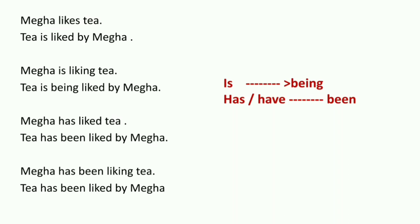Now, what change do we make to the verb? We keep the tense the same. 'Likes' is present tense — all sentences on slide 1 are present tense. Since I must not change the tense, I keep it present and add the helping verb 'is.' So: 'Tea is liked by Mega.' Helping verb 'is' is added, verb becomes third form 'liked.' Let's verify the four conditions: subject-object changed ✓, verb third form ✓, tense same ✓, helping verb added ✓.